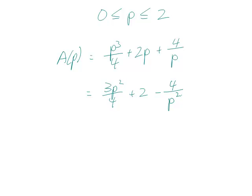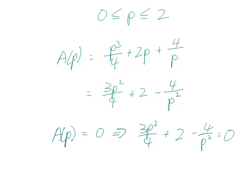If we set A of p equals 0 to find the critical points, we get 3p squared over 4 plus 2 minus 4 over p squared equals 0. We can clear out the denominators by multiplying everything by 4p squared to get 3p to the 4th plus 8p squared minus 16 equals 0.